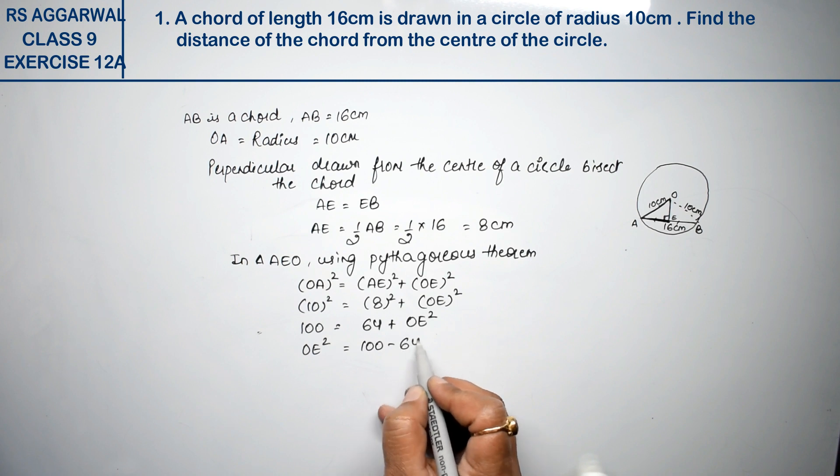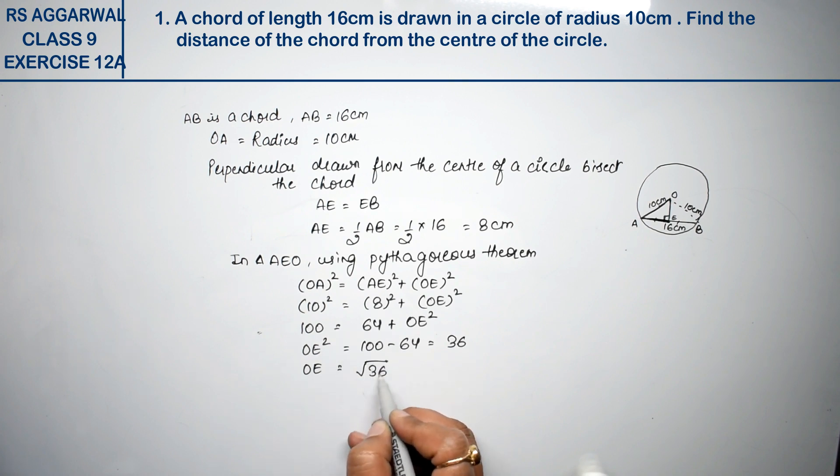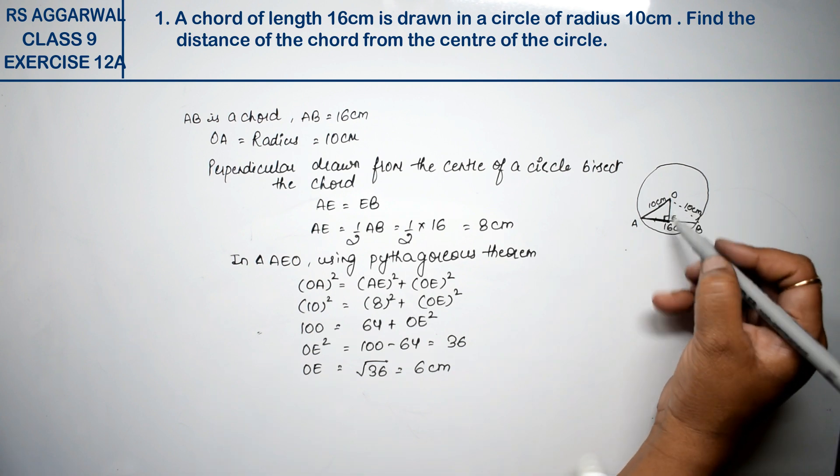This is 36. OE is square root of 36, that is 6 cm. What is our distance? Distance of the chord.